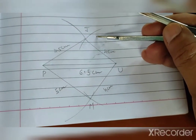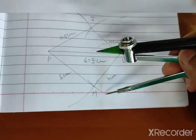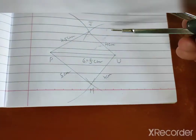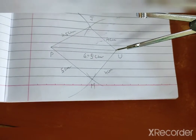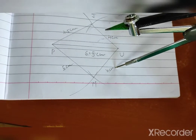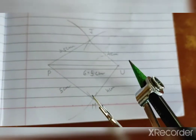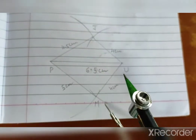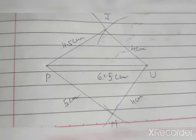Now, the quadrilateral name is J-U-M-P, so definitely M is below. Because according to the textbook, the name of the quadrilateral is J-U-M-P and we can't change that name. So in the next step, U as a center and by taking radius 4 cm, we will draw an arc. Now P as a center and by taking radius 5 cm, draw another arc which intersects the previous arc at point M. Join P to M and U to M. So J-U-M-P is our required quadrilateral.